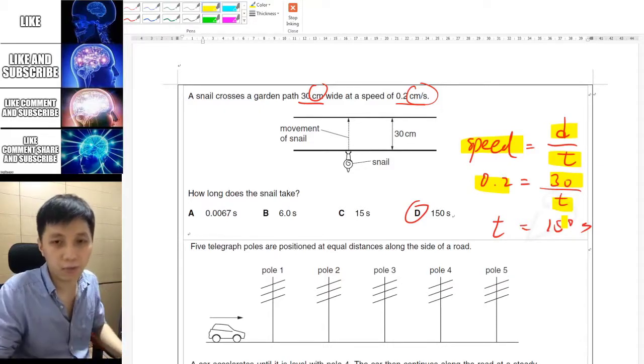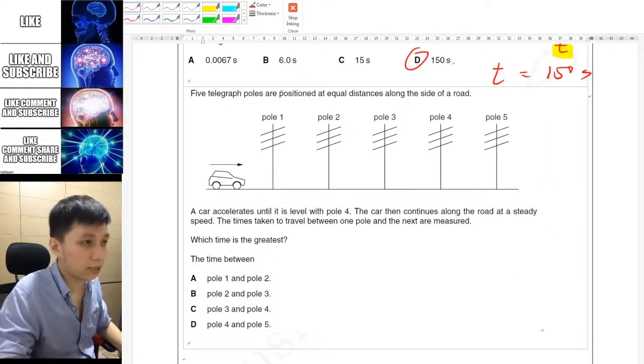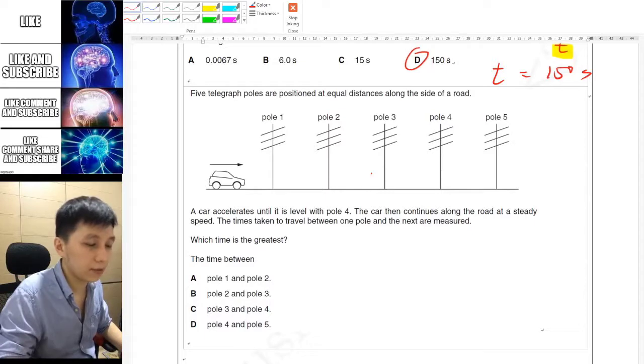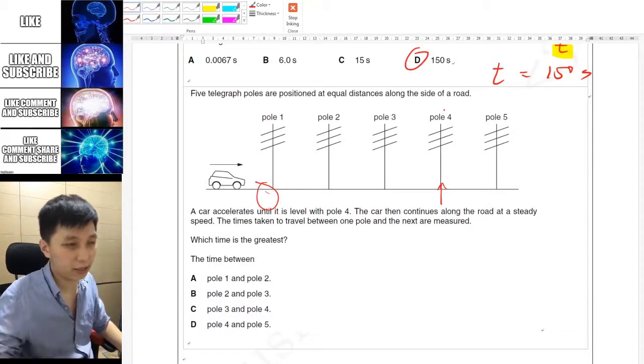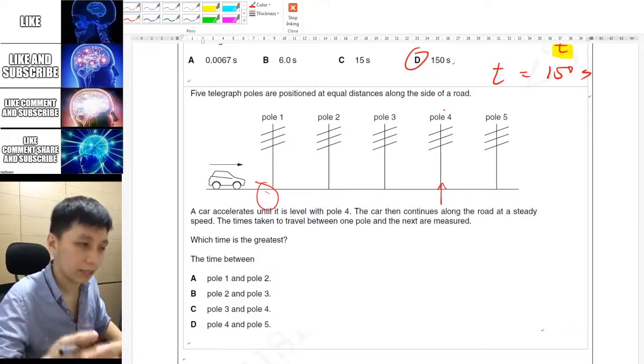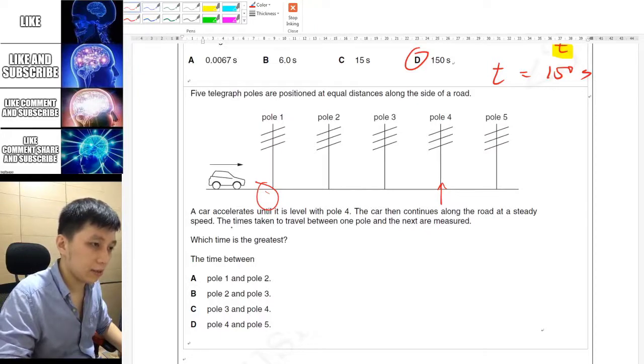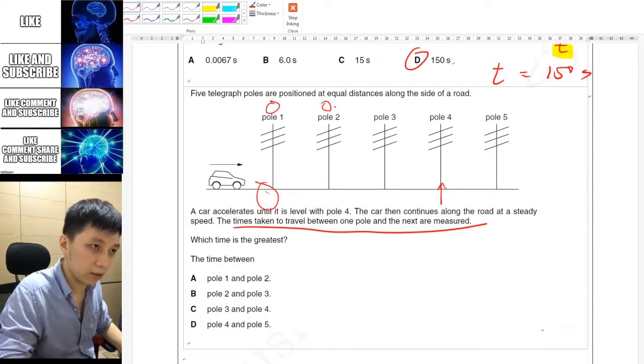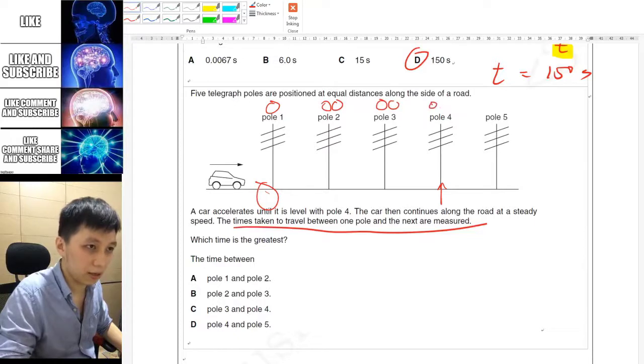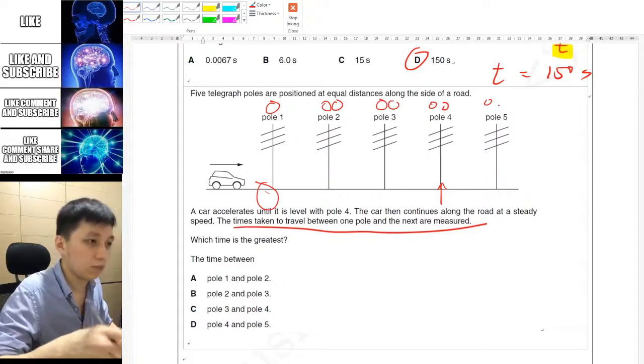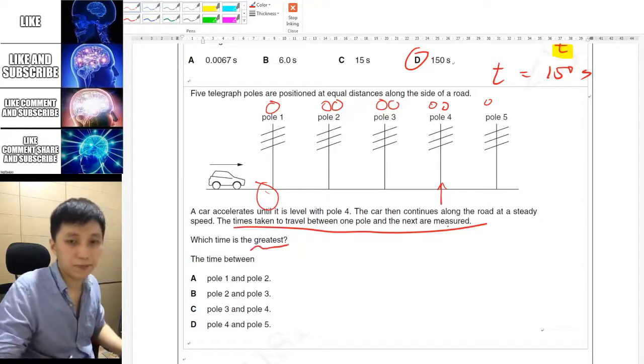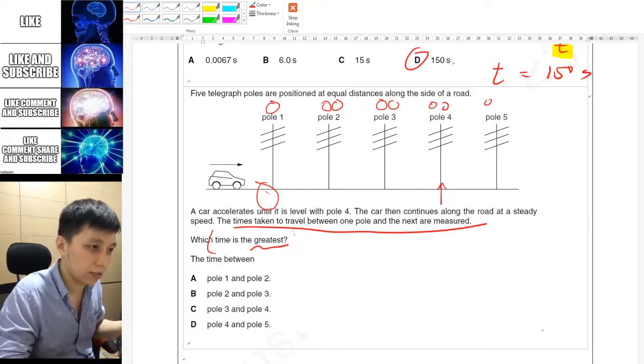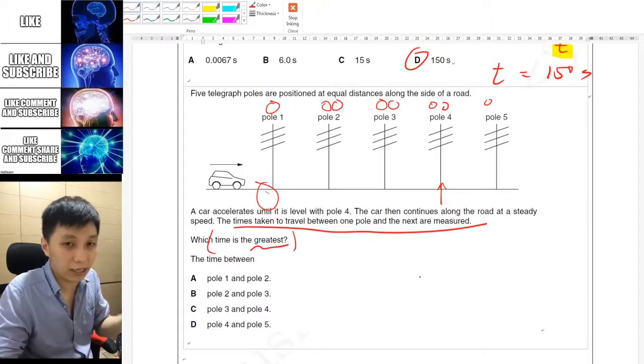Last question is actually quite interesting. There are five poles in total in the street, and the car will accelerate from the beginning until pole 4 and it will stop accelerating. It doesn't mean it will stop moving, it just stops accelerating. That means the velocity would maintain the same. If the time is measured between each pole, so a timer starts here and stops here, and also start another timer and stop here, and that should be the same for all of these, then which of the time will be the greatest?